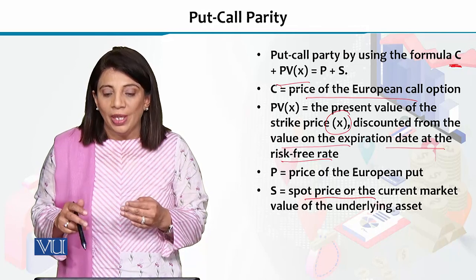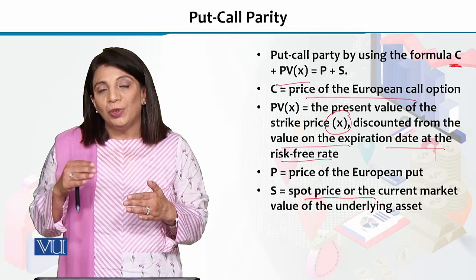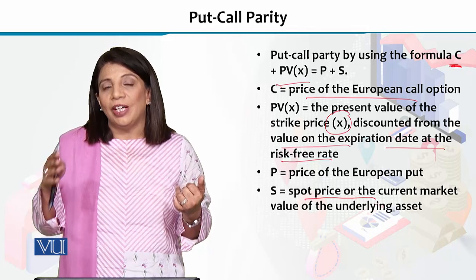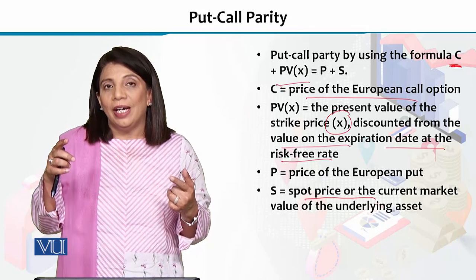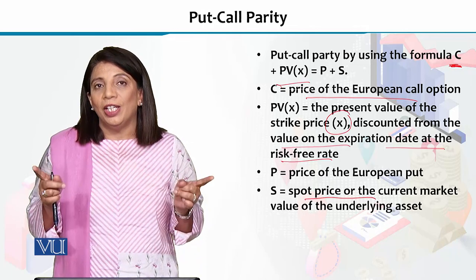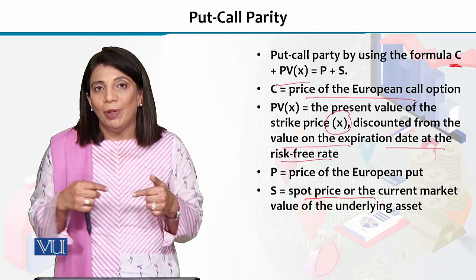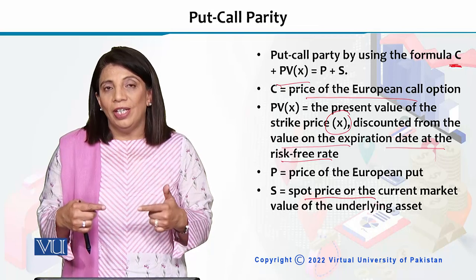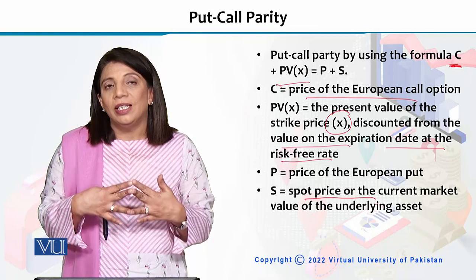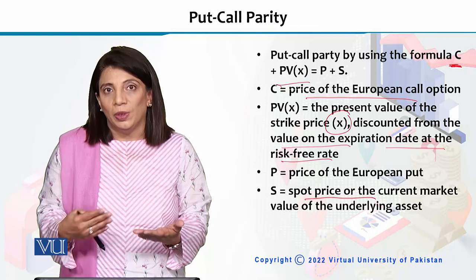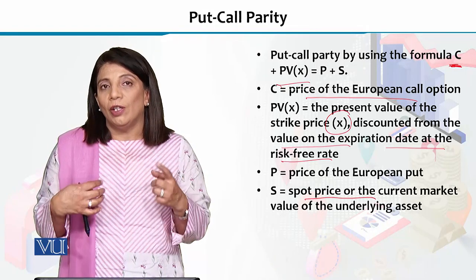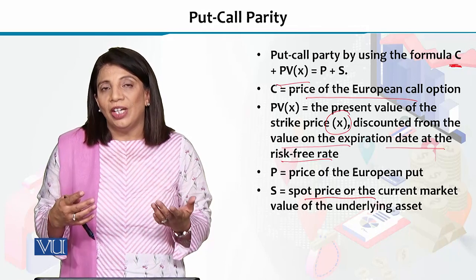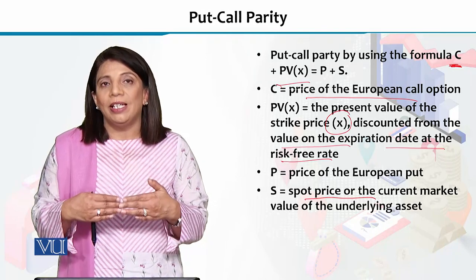So you have: the spot price, the price of the put option, and on the other side the call option price and the present value of the strike price discounted at the maturity date. When these two sides are equal, we have put-call parity. We can consider this as the equilibrium value. If the left-hand side and right-hand side differ, arbitrage occurs and eventually parity is re-established.